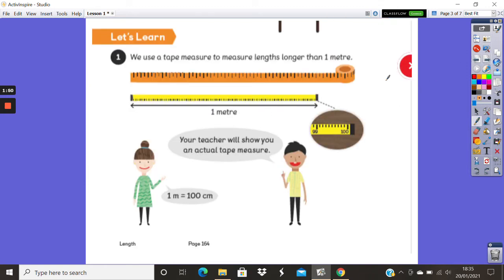So if it's longer than a meter, then we would use a tape measure. And we need to remember that in 1 meter, there are 100 centimeters. It's really important that we remember that. So 100 centimeters equal 1 meter.